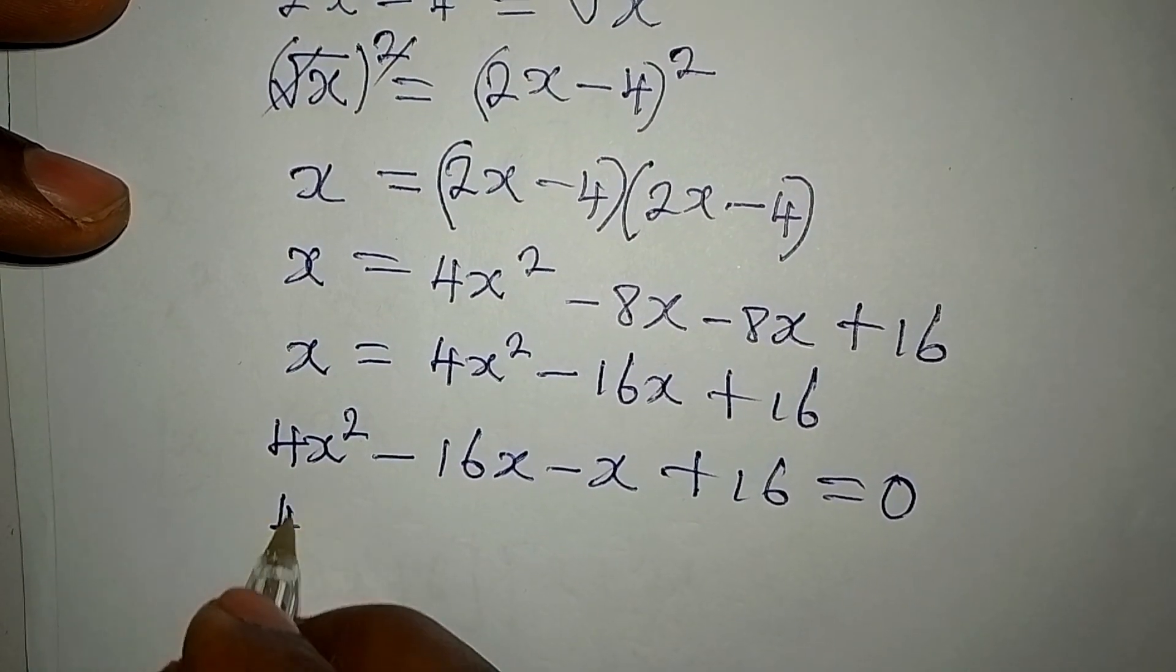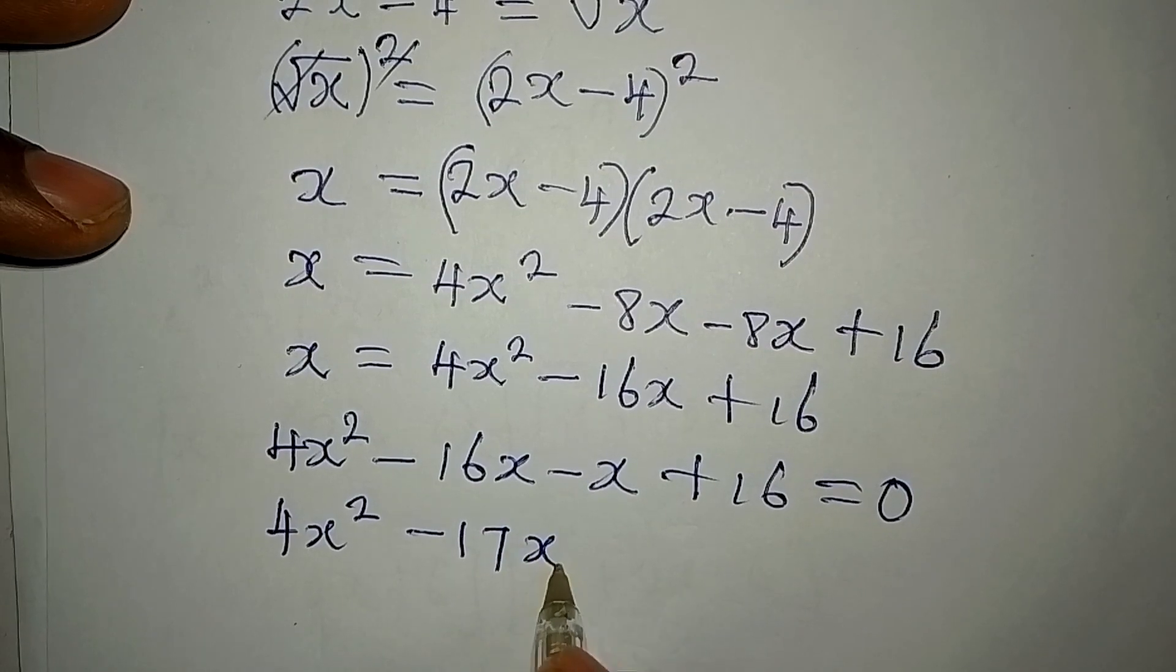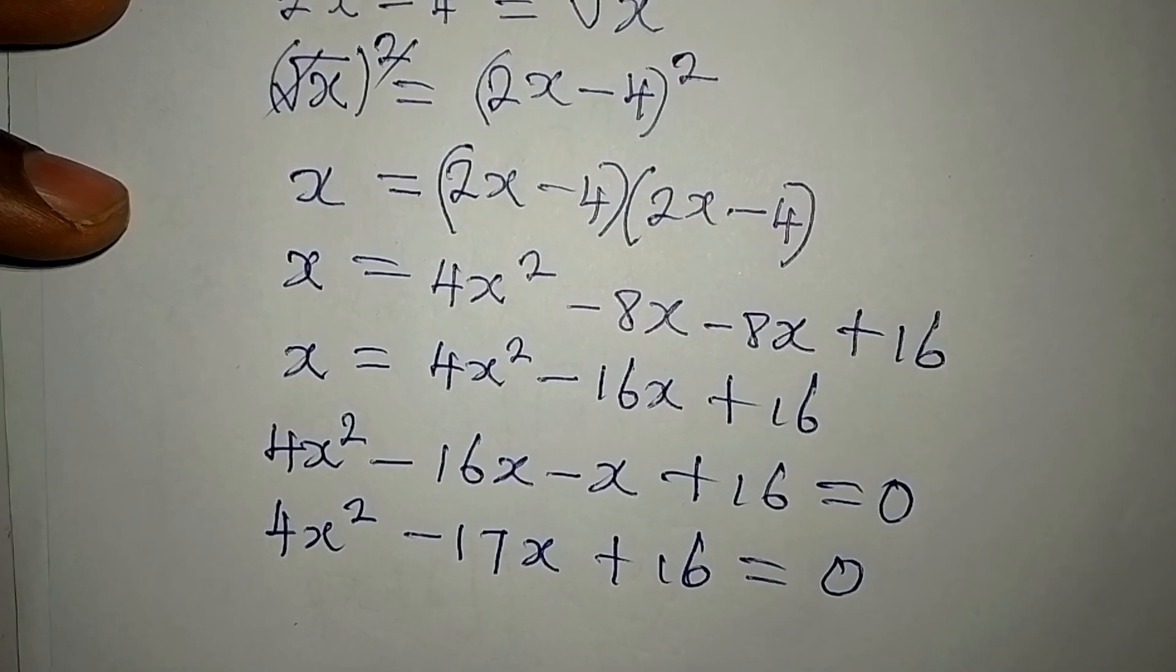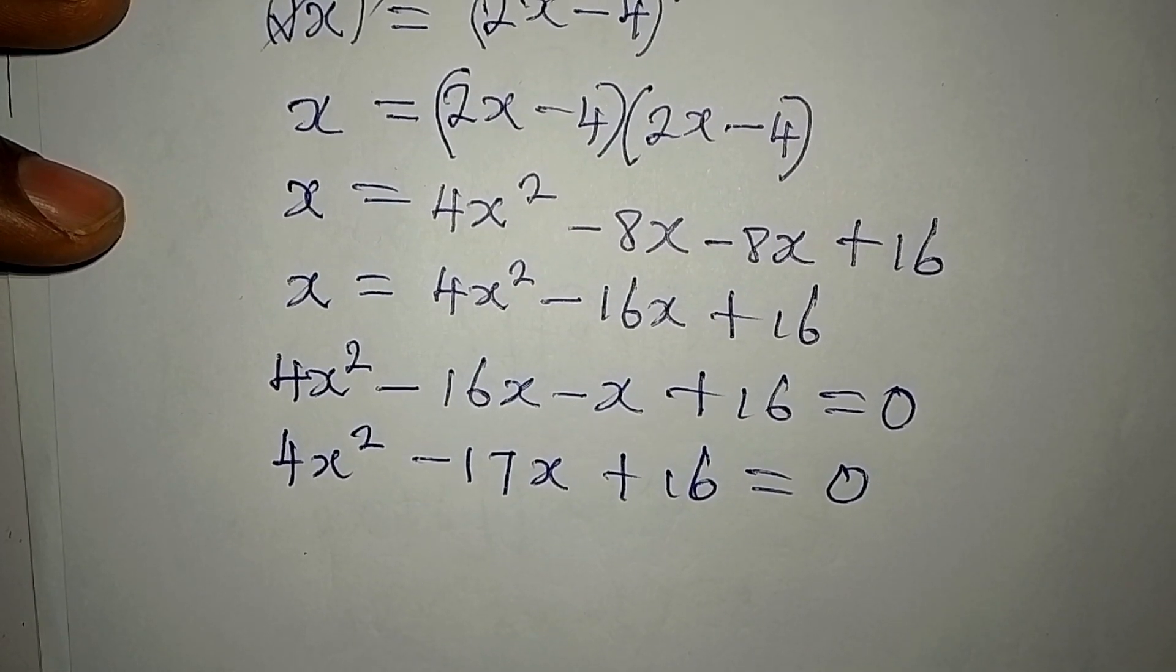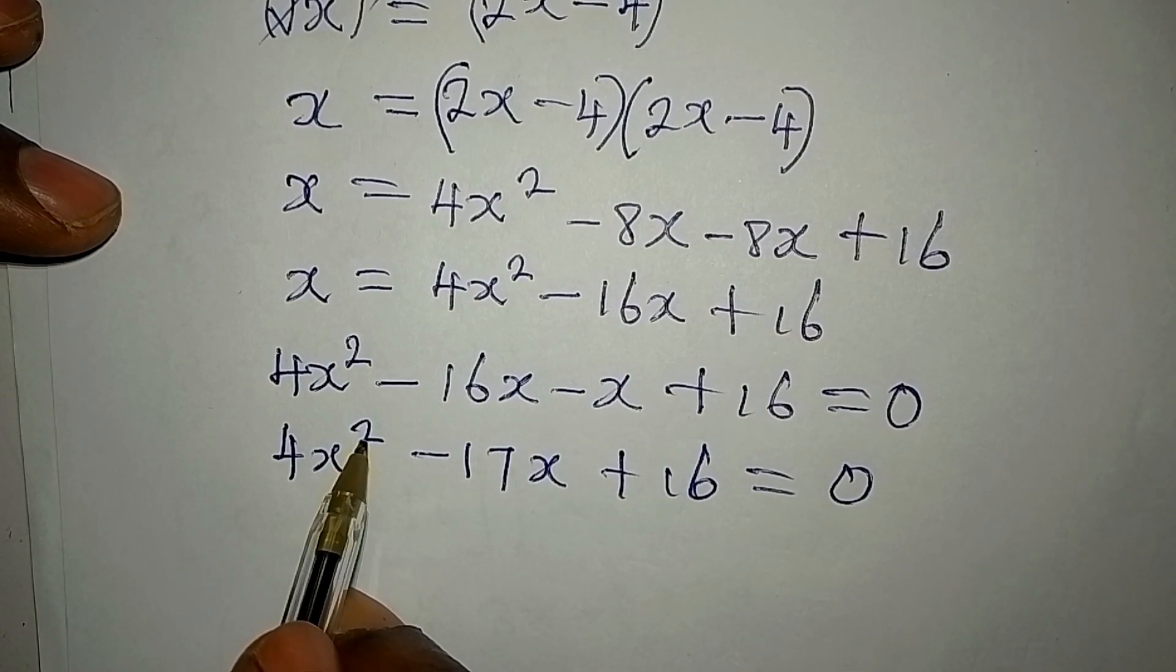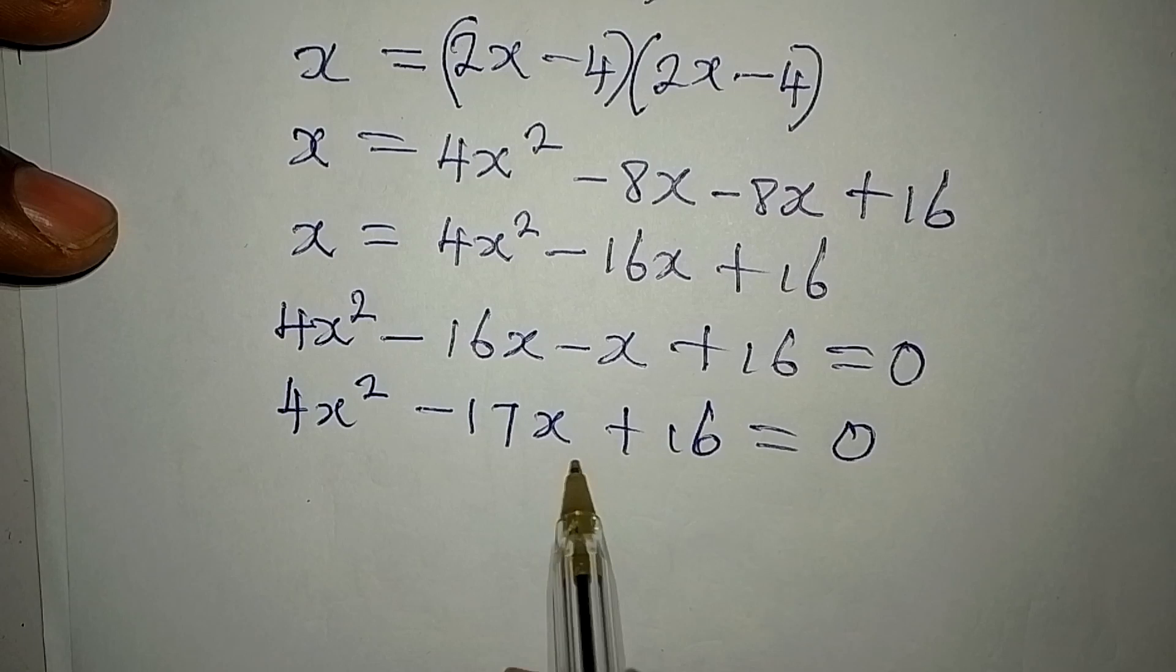Now, we have 4x squared minus 17x plus 16 to be equal to 0. And now, what kind of an equation is this? This is a quadratic equation because of the power of 2. So, we will look for a method that we'll use to solve this.